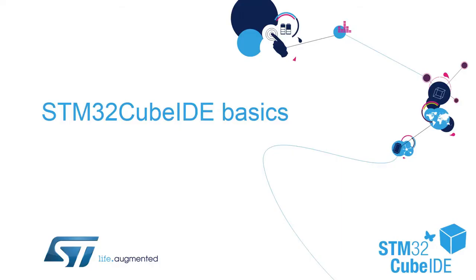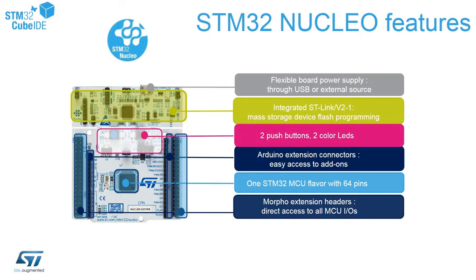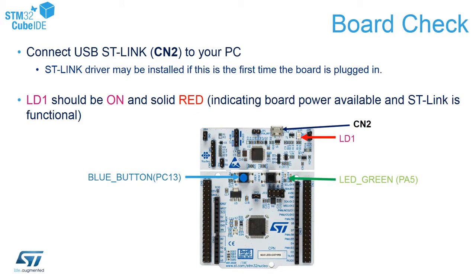Hello and welcome to our STM32CubeIDE basics training session. In this part I would like to introduce you to the board we will use: it is called Nucleo G071RB. You can find the name on the board. It contains its own programmer/debugger called ST-Link v2.1 at the top. Below that is the dedicated board for the microcontroller — our microcontroller is the STM32G071RBT6, a 64-pin MCU from the STM32G0 family, the central chip on the board.